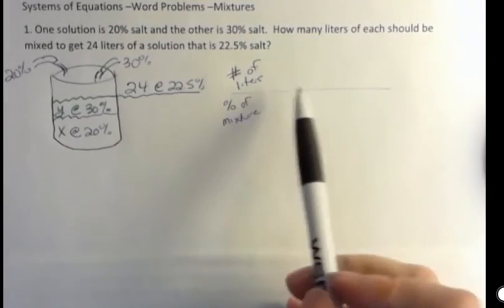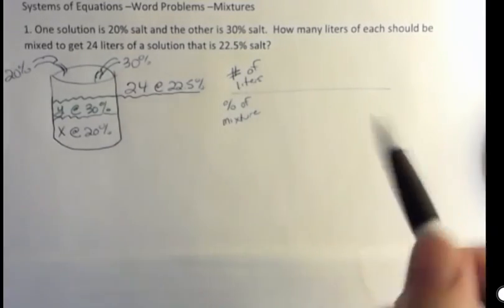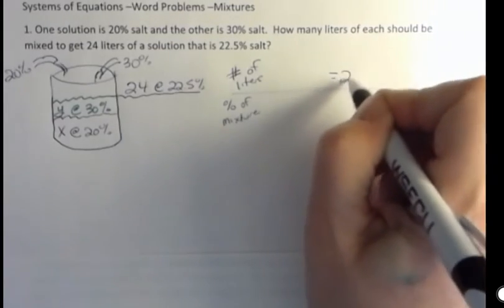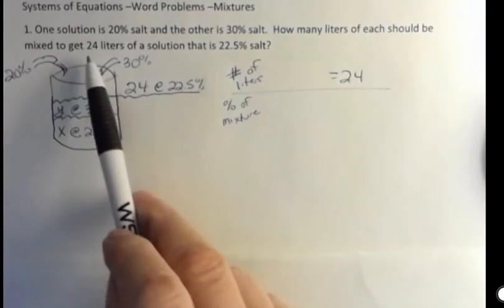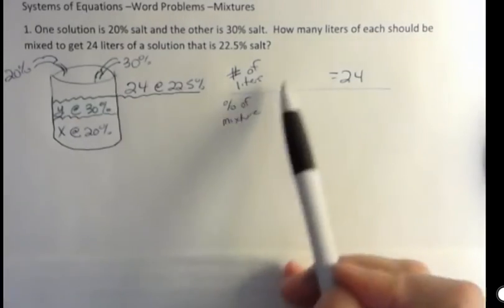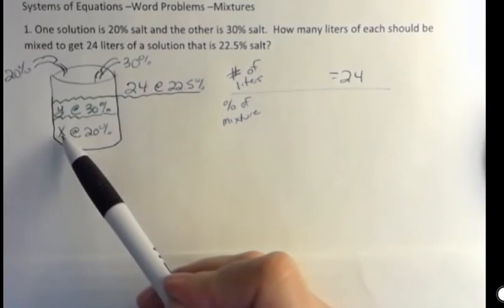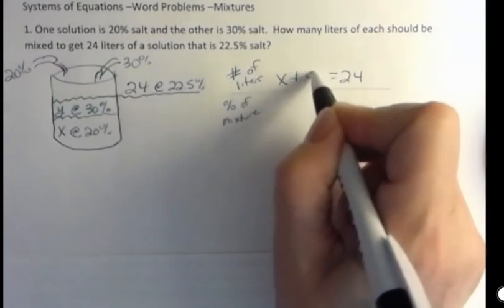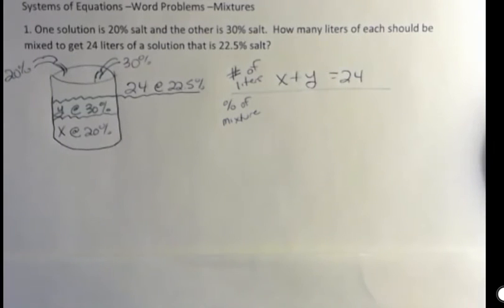So in the first one, I'm just looking at the number of liters. How many liters do I have? Well, I know that I have 24 liters altogether because I was told I want 24 liters. And what do I have that makes up to 24? Well, I have X and Y. So I have X plus Y equals 24. There's one of my equations.